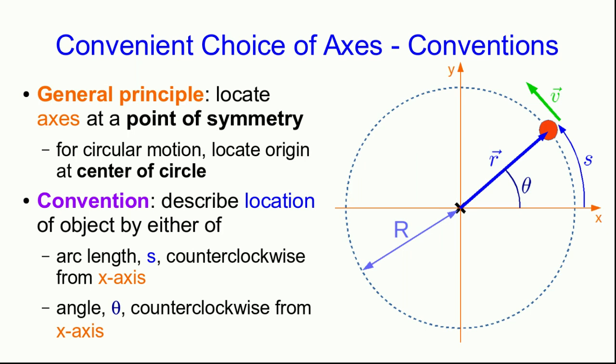Having done that, the position vector at any time is pointing from the center of the circle to the object that's going around the circle. We have a choice of two ways to describe the location of the object. We could describe how far around the circle it has gone, a length measurement called the arc length s, measured counterclockwise from the positive x-axis. Or we can define the angle θ counterclockwise from the x-axis where the object is on the circle.